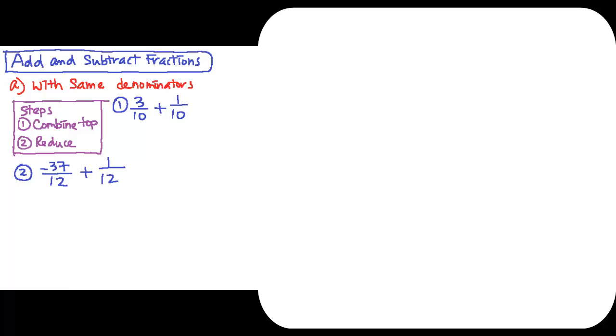So number one, we have 3/10 plus 1/10. Since they have the same denominator, we can put them in one fraction. 3 plus 1 on top and the bottom would be 10. Together we have 4 on top and 10 at the bottom as denominator.